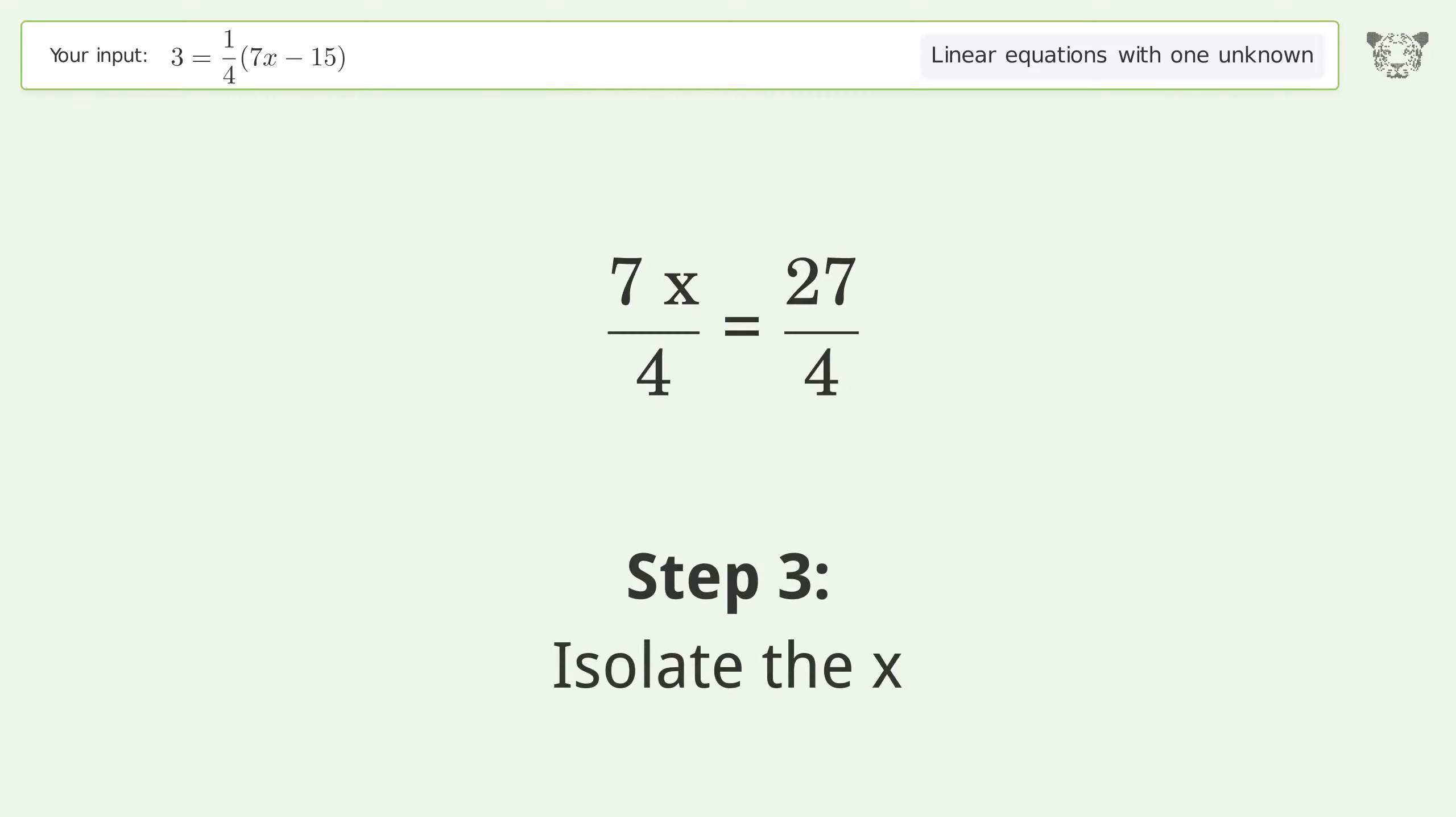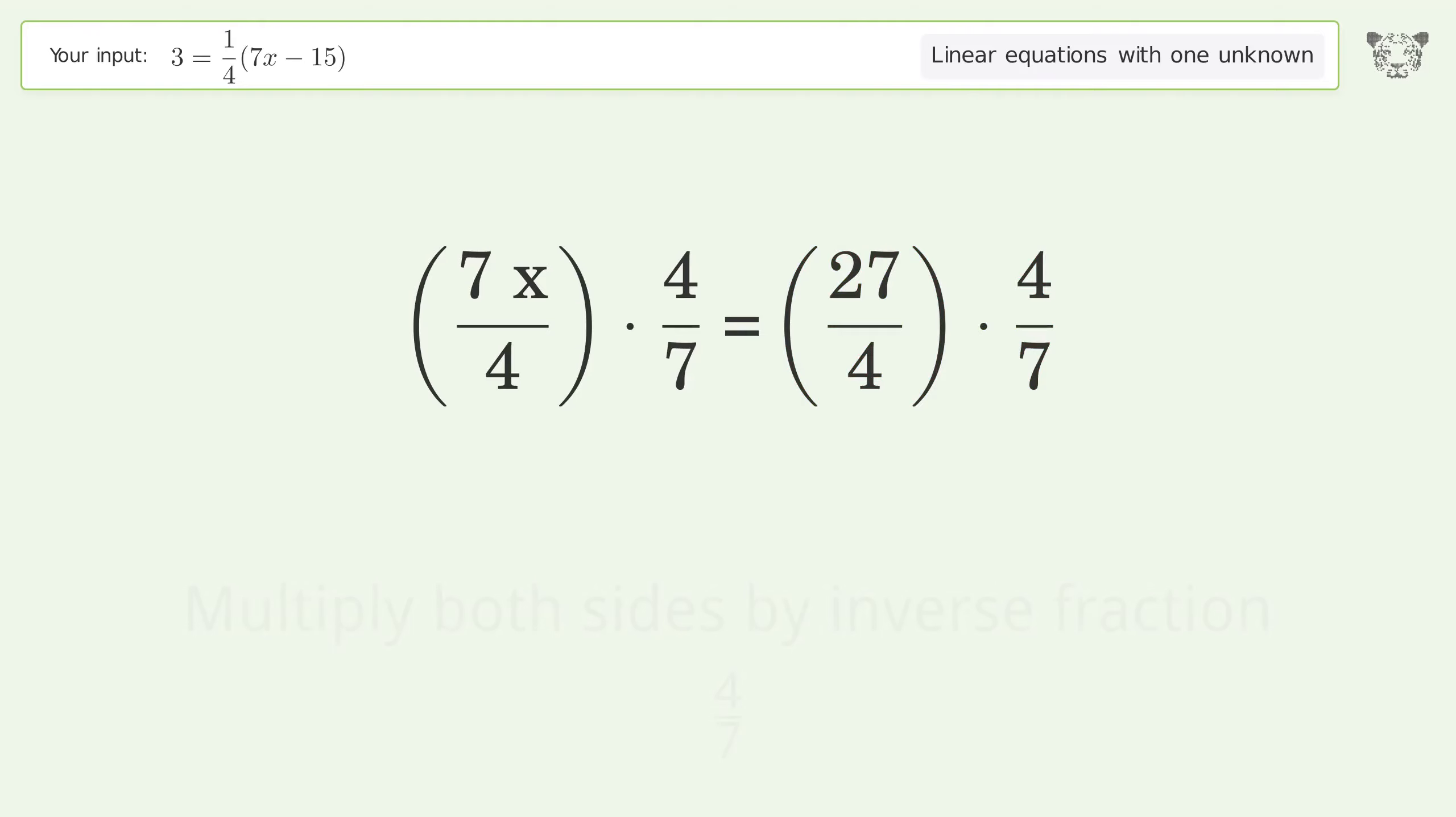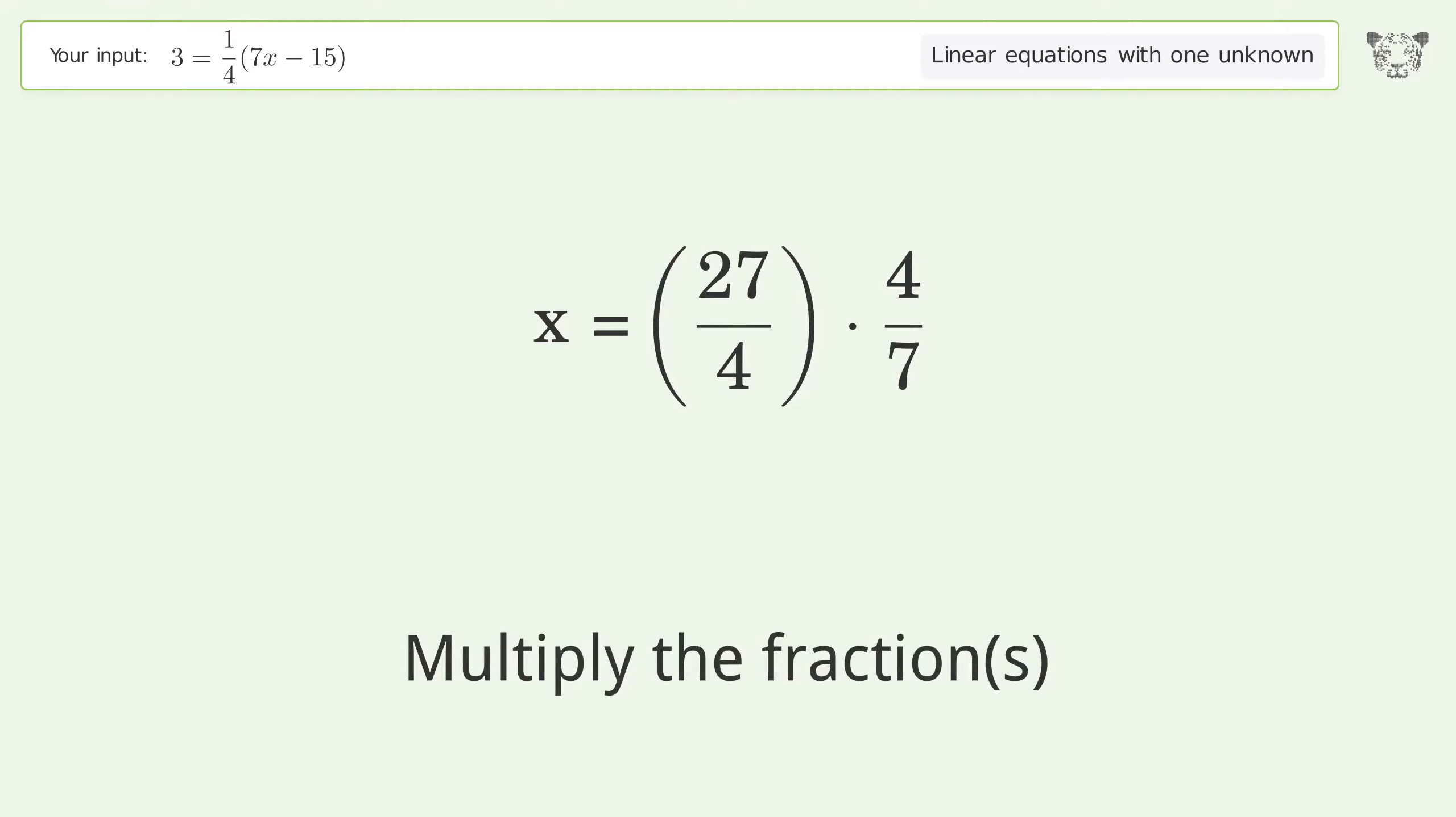Isolate the x. Multiply both sides by inverse fraction 4 over 7. Group like terms. Multiply the coefficients. Simplify the fraction. Multiply the fractions.